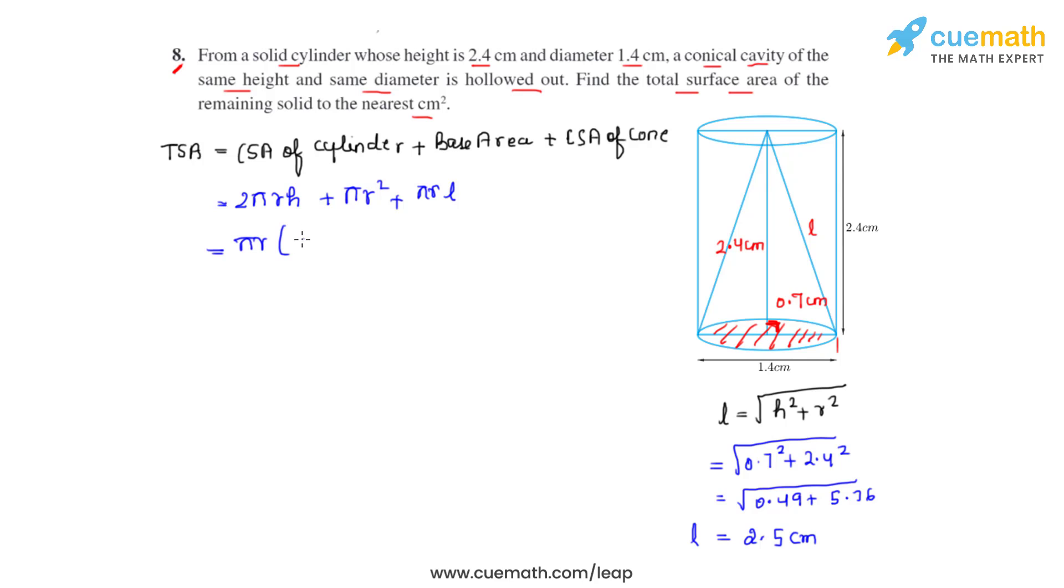Before we do that, we can take out some common terms. Taking out common terms πr, we are left with 2h + r + l. Now let's substitute the values: 22/7 times the radius, which we know is half the diameter 1.4 centimeters, which we get as 0.7 centimeters. We substitute 0.7, 2 times 2.4 plus radius 0.7 plus the slant height which we have just calculated as 2.5 centimeters.